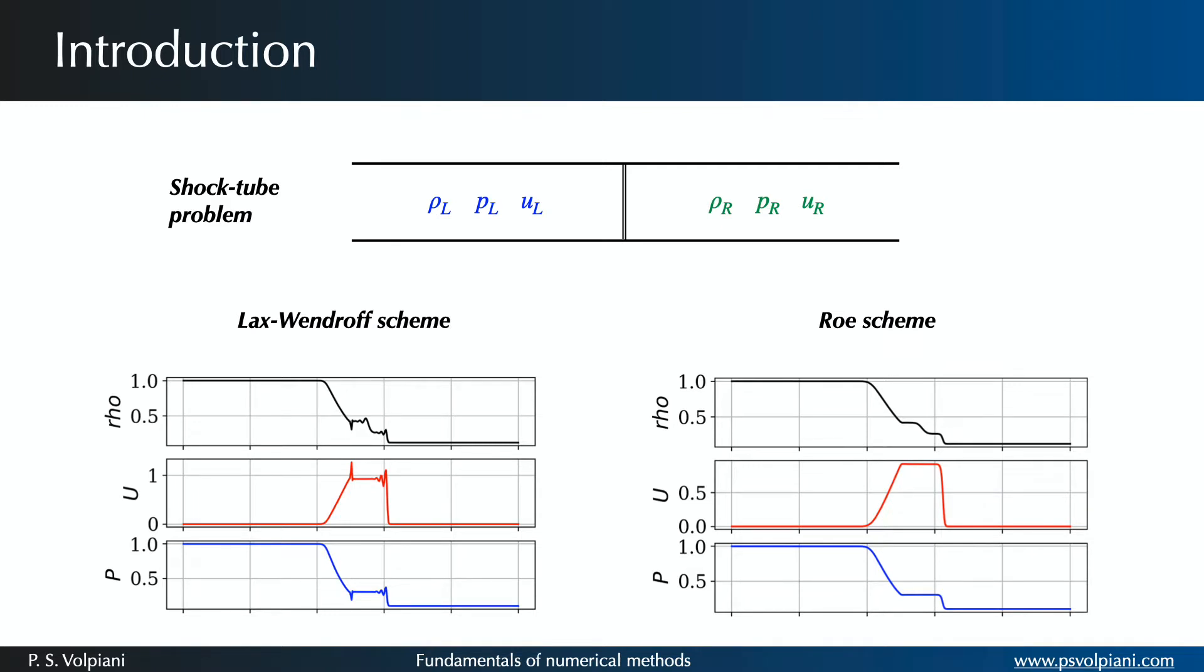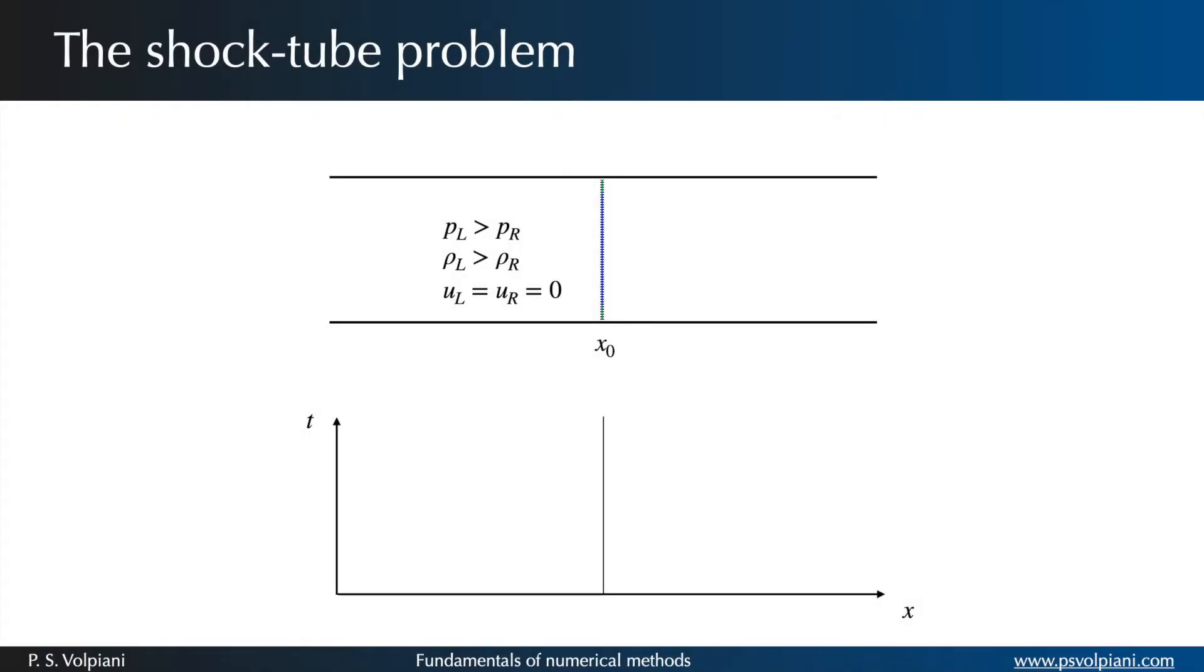On the other hand, Roe's upwind scheme takes into account the hyperbolic character of the system and allows a much better numerical treatment. We saw that in the shock tube problem, also called Riemann problem, two gases are separated by a diaphragm and when the diaphragm breaks, waves travel along the length of the tube.